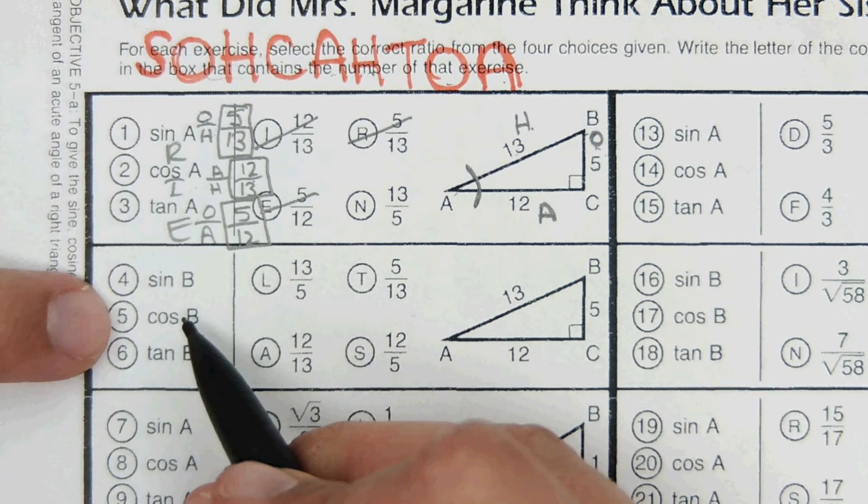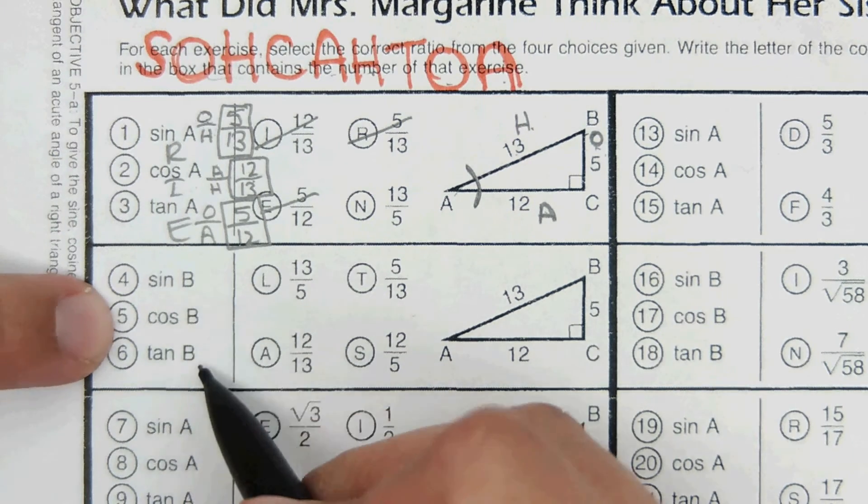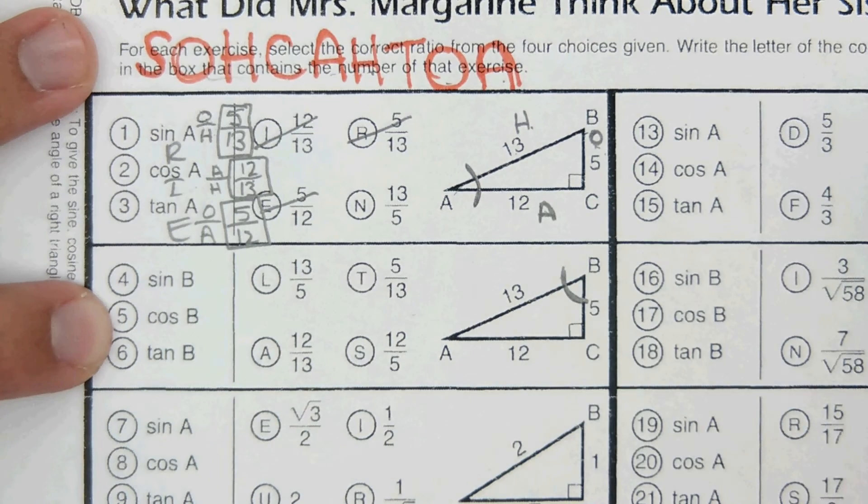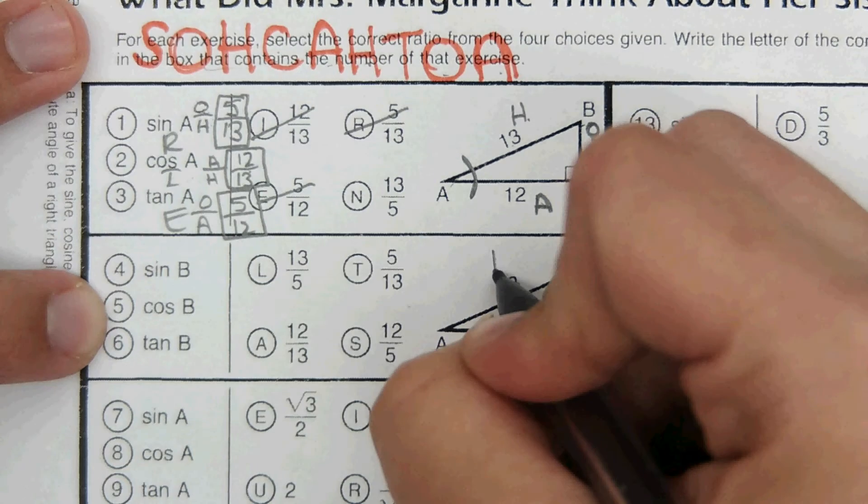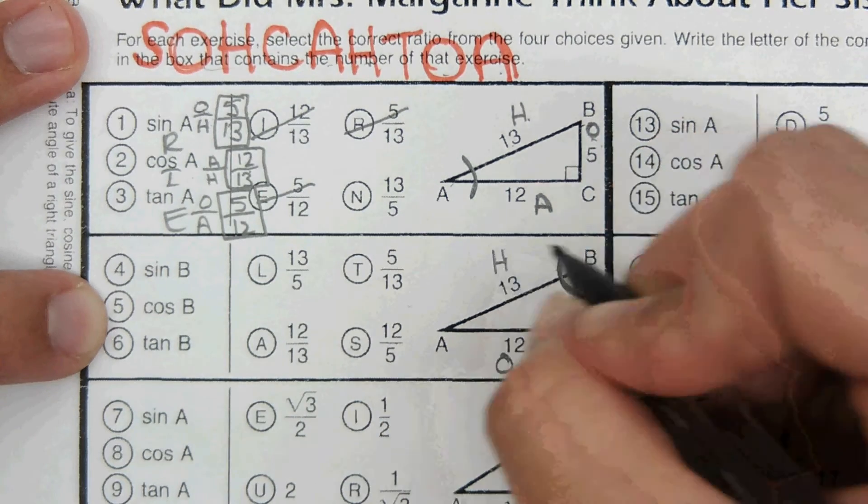So this one right here, all of these are B, so I just marked it. That's my designated angle, angle B. And then based on that, opposite, hypotenuse, and adjacent.